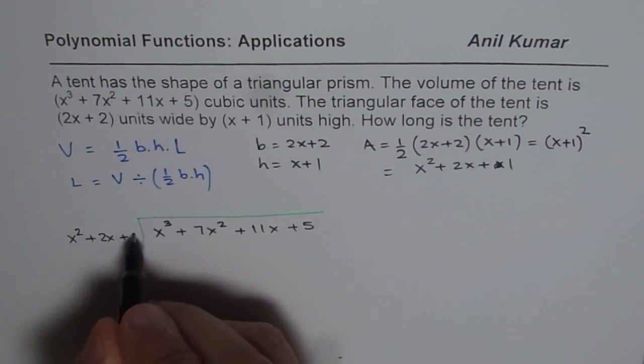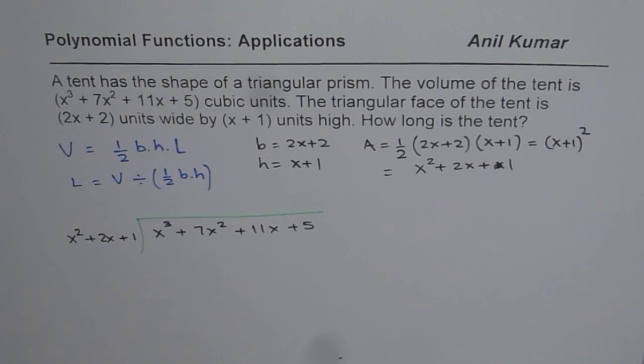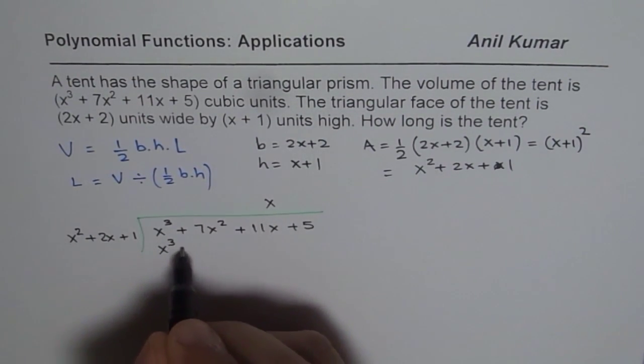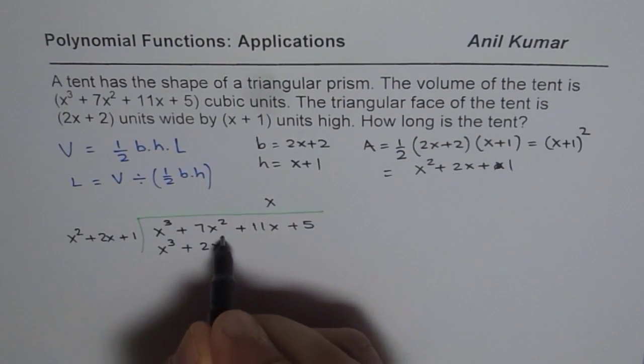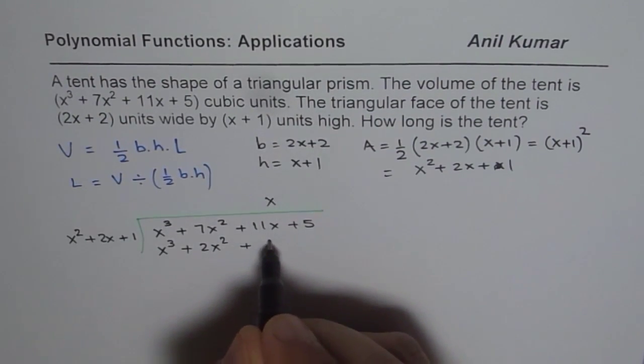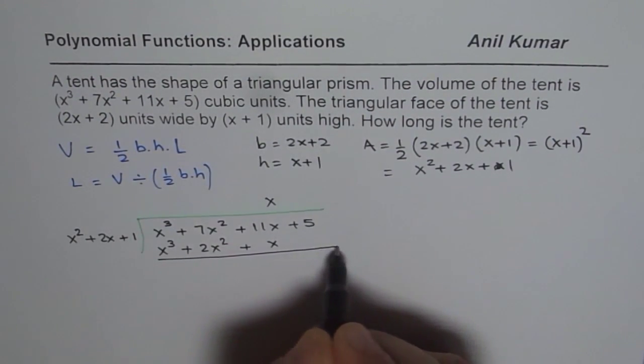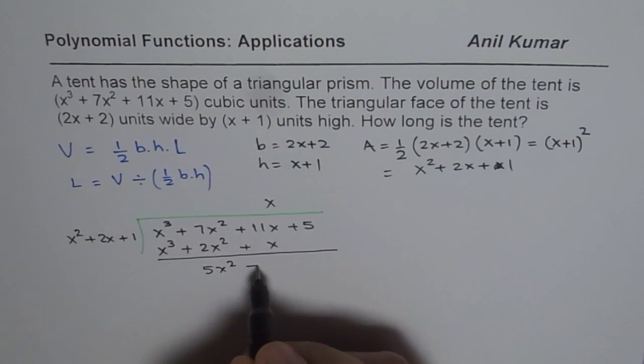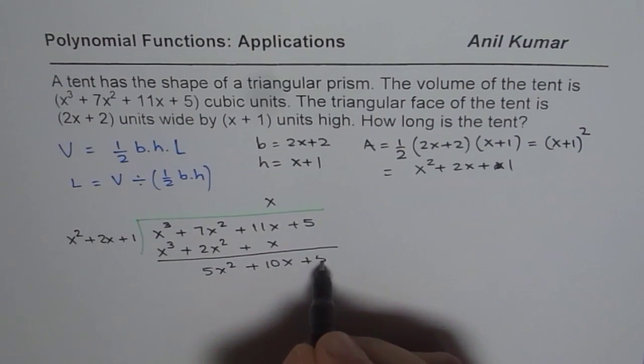And that should be divided by the area, which is x squared plus 2x plus 1. Now, if I divide it, what do I get? I get x times x cubed plus 2x squared plus x. And when you take away from here, you get 5x squared plus 10x plus 5.